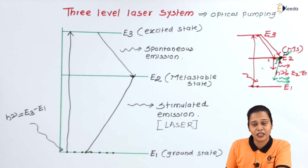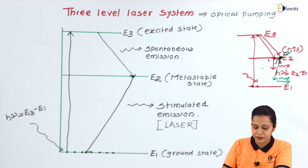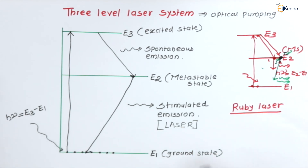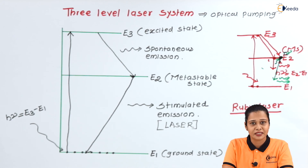The example of the three level laser system is the ruby laser. The ruby laser is the first discovered laser and it was a three level laser system. This is the concept of the three level laser system.